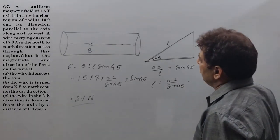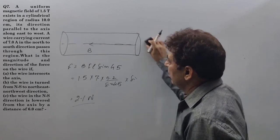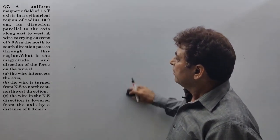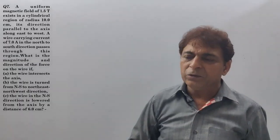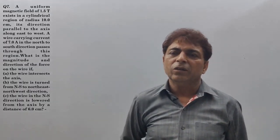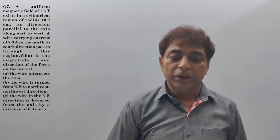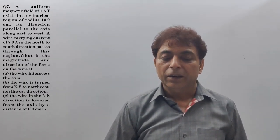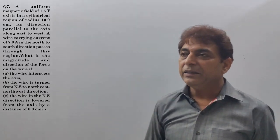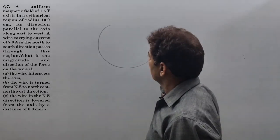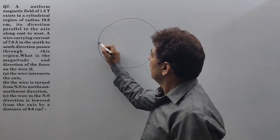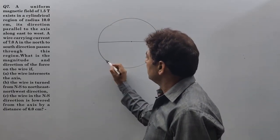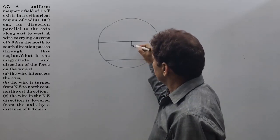And the most important part, the third part. The third part of the question is, the wire in the north-south is lowered from the axis by a distance of 6 cm. There is a diameter, 20 cm. This wire will be below 6 cm.